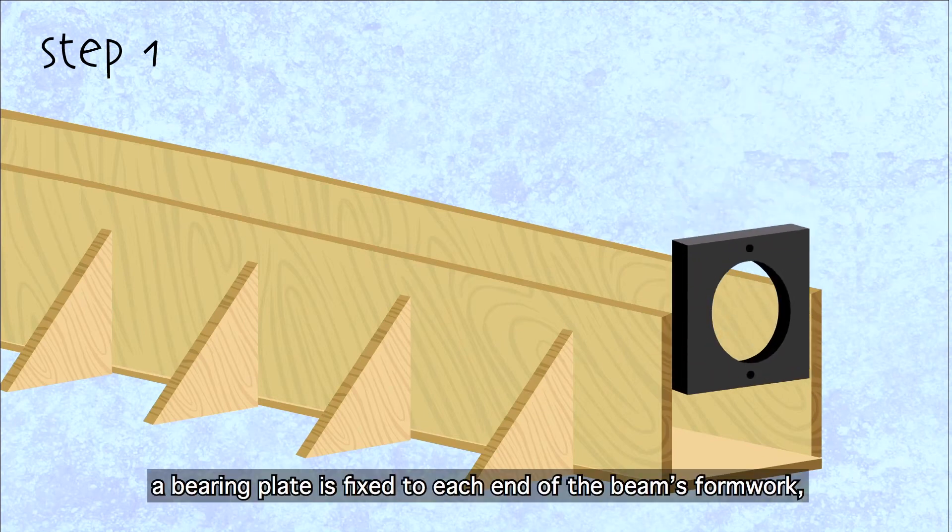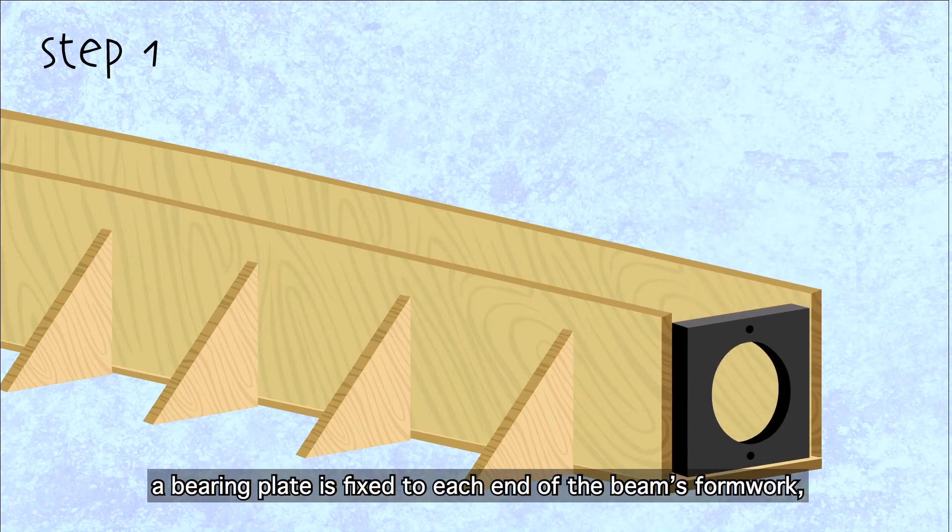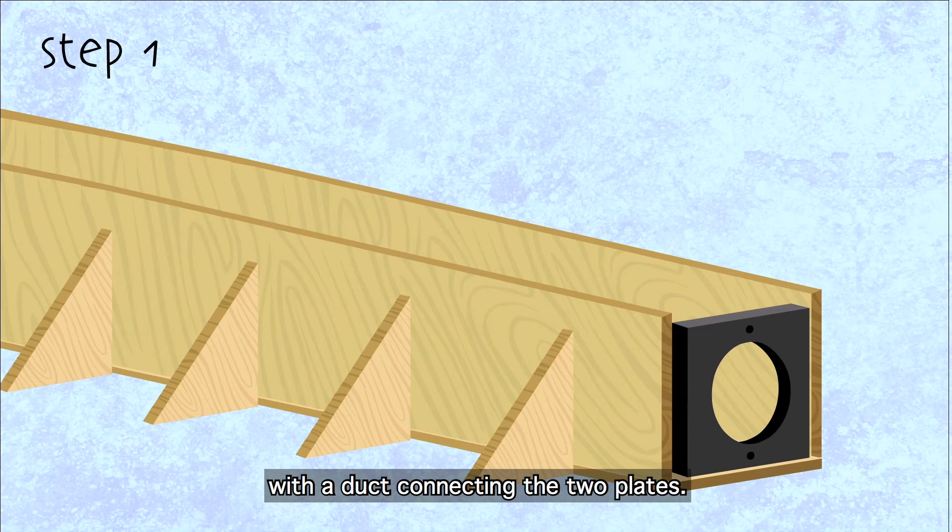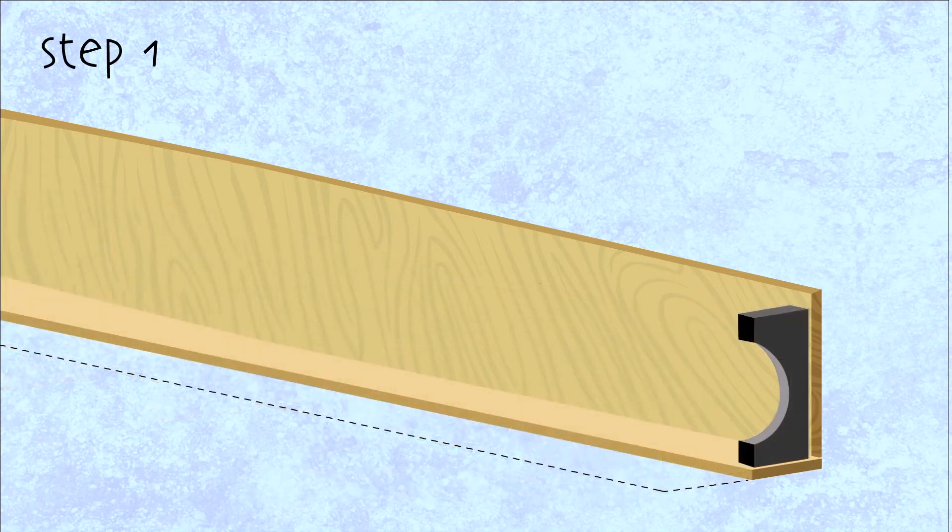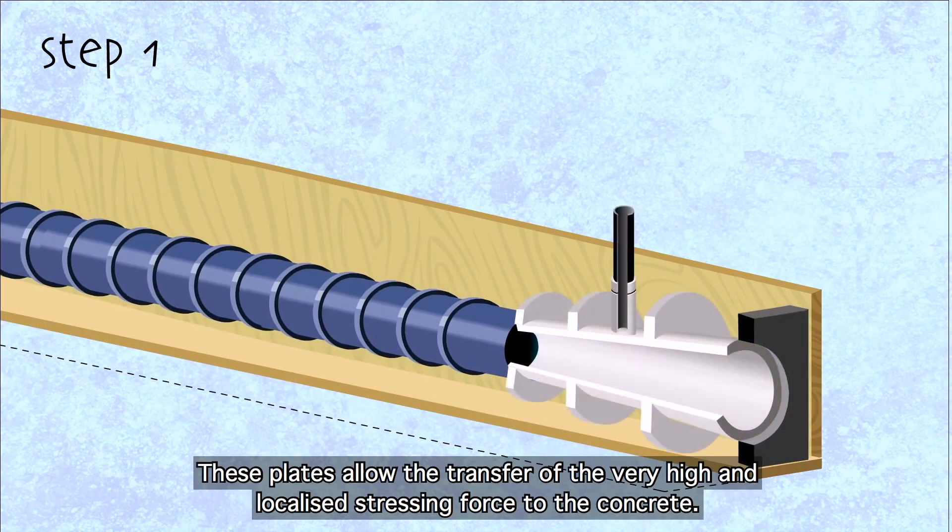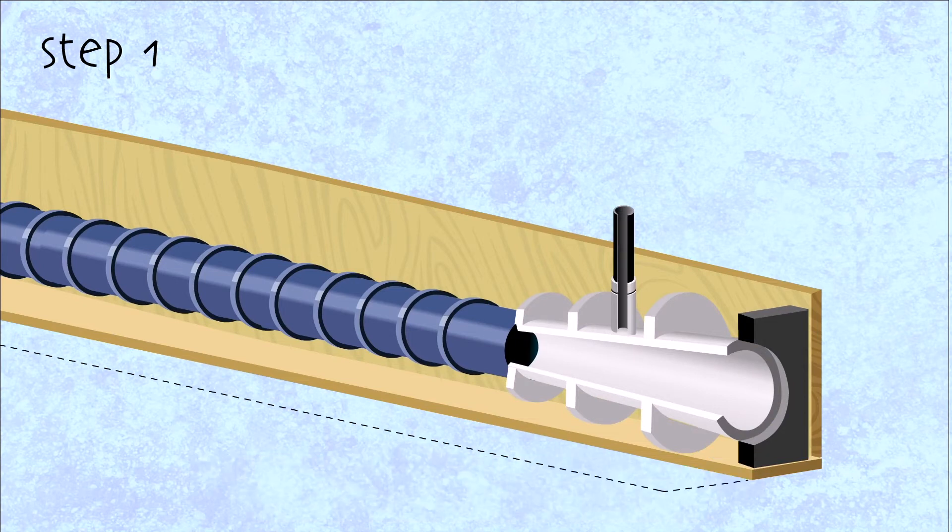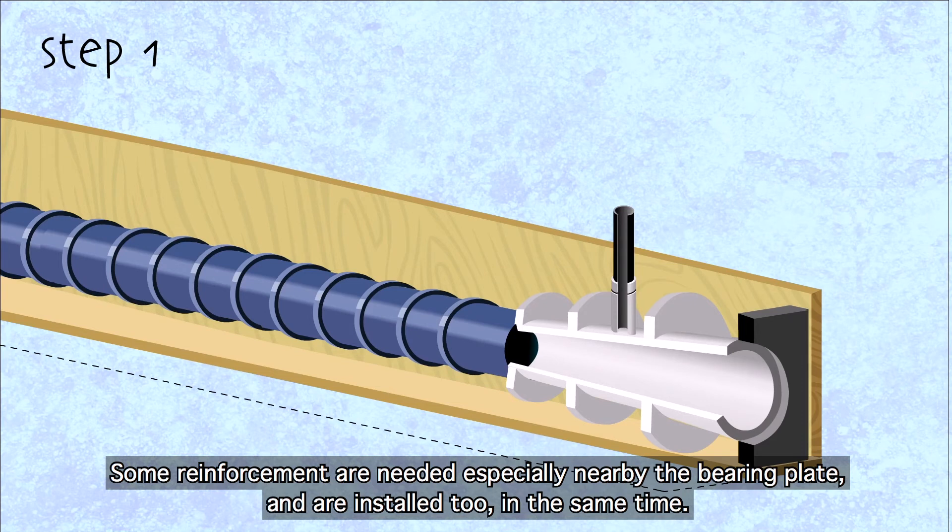Step 1. A bearing plate is fixed to each end of the beam's formwork, with a duct connecting the two plates. These plates allow the transfer of the very high and localized stressing force to the concrete. Some reinforcements are needed, especially near the bearing plate, and are installed at the same time.